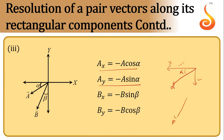The same vector B this time subtends an angle beta with the negative y-axis. So both the components are negative. That means x component is minus B sin beta and y component is minus B cos beta.